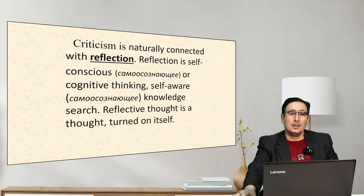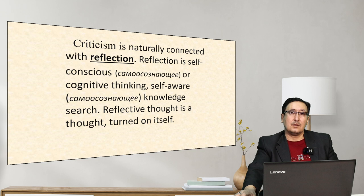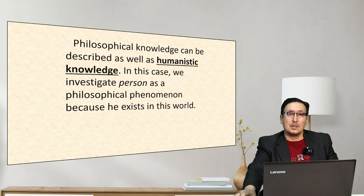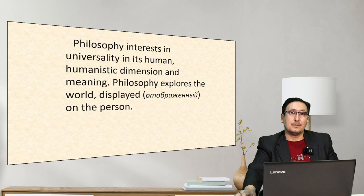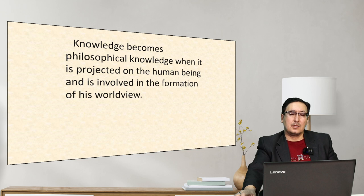Philosophical criticism reveals the limitations and relativity of all knowledge. Philosophy differs from rhetoric, which convinces the listener of one way of truth; the main instrument of philosophy is not conviction but the discovery and critical test of truth. Criticism is connected with reflection — self-conscious or cognitive thinking. Philosophical knowledge can also be described as humanistic knowledge, exploring the world in its human dimension and meaning.